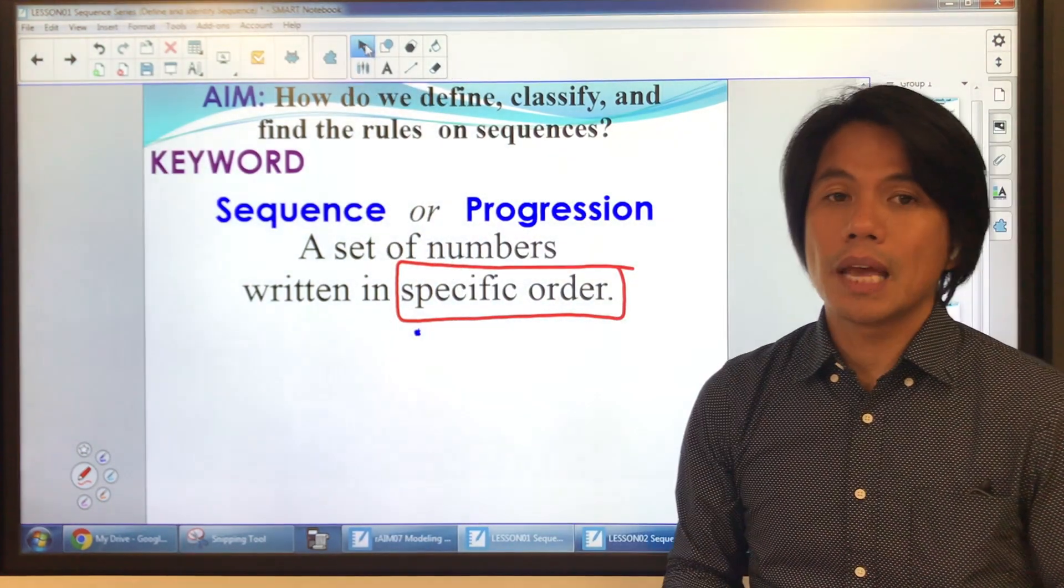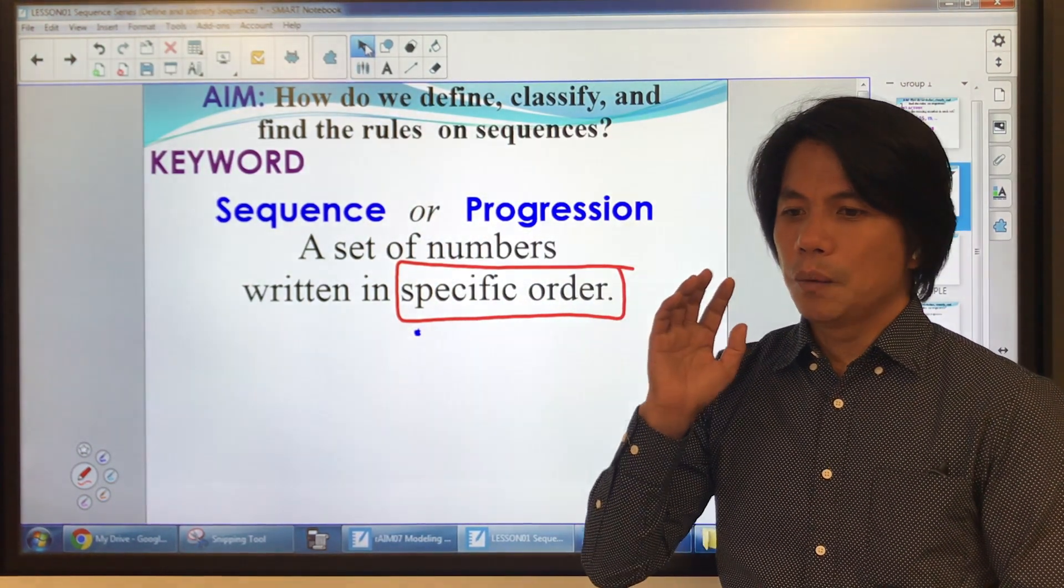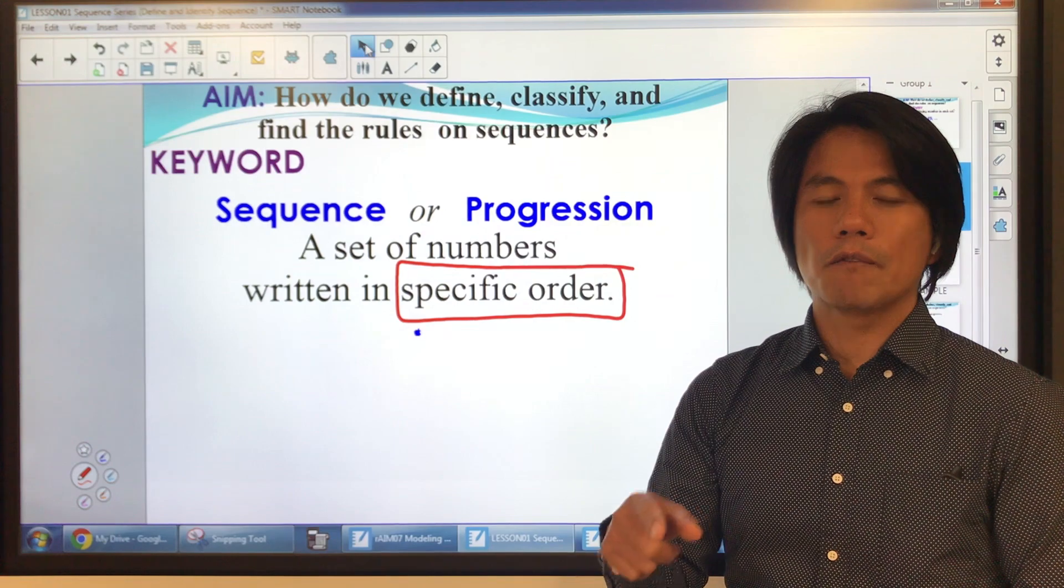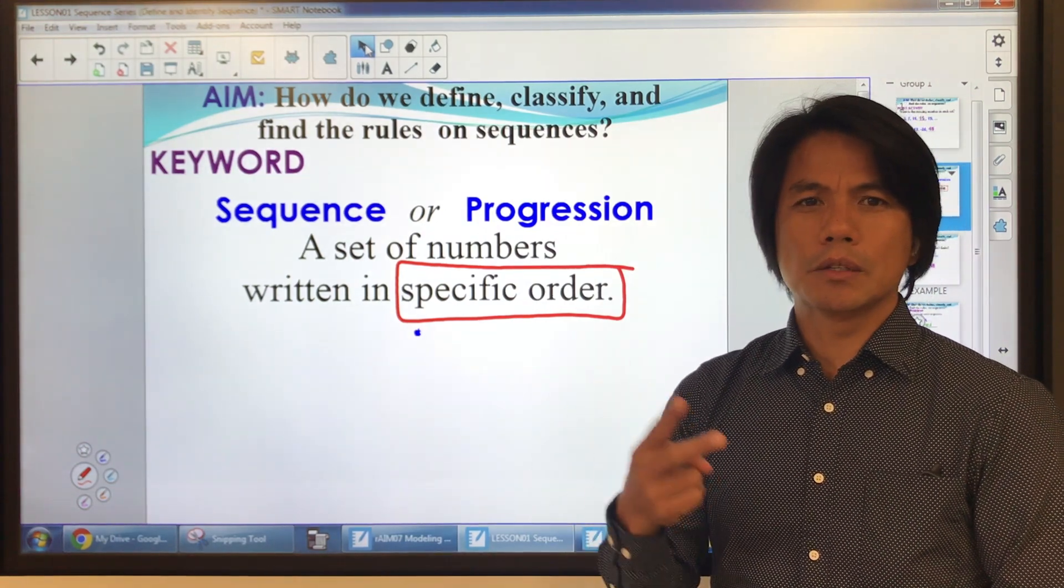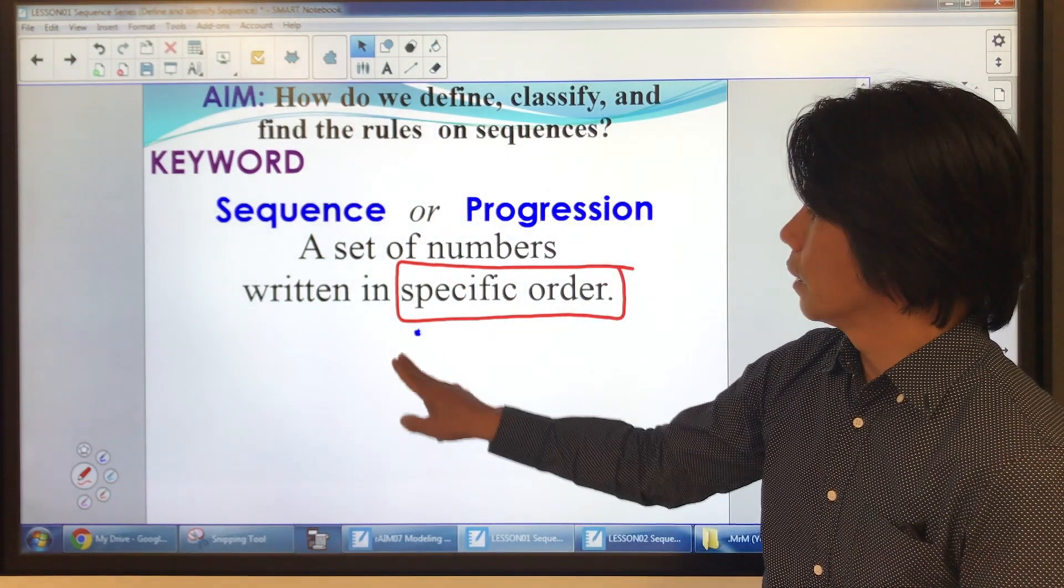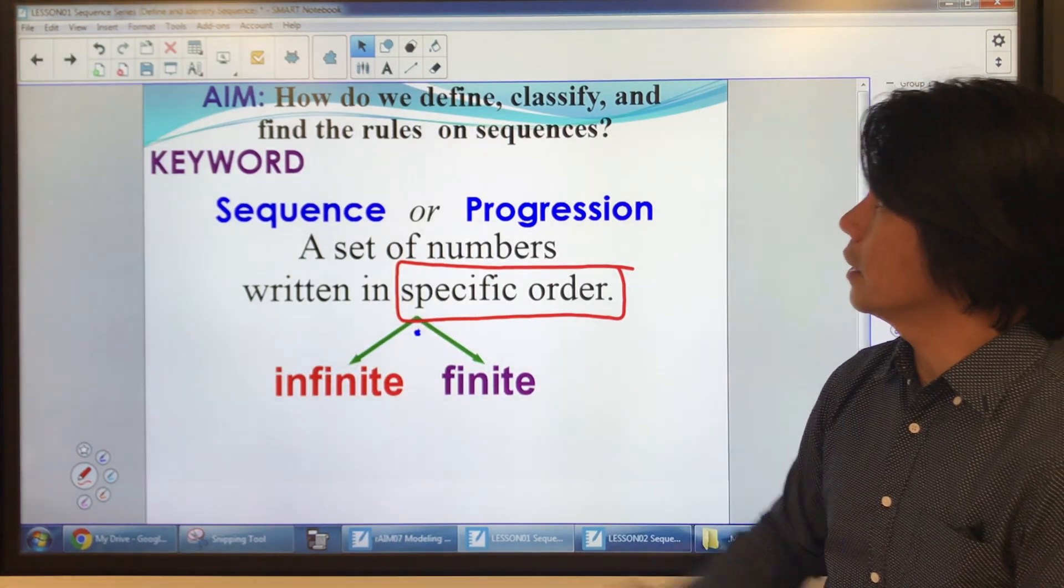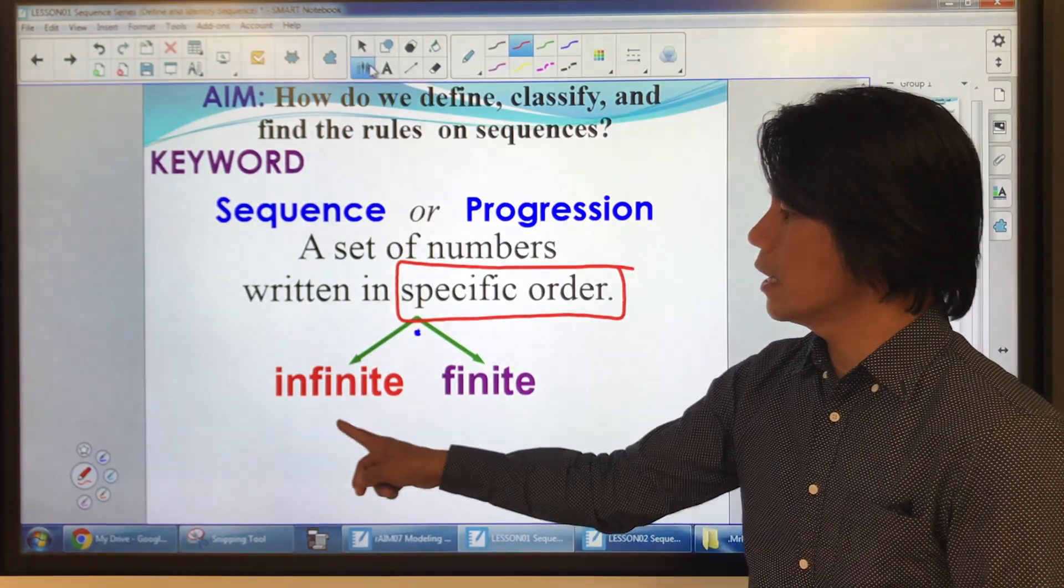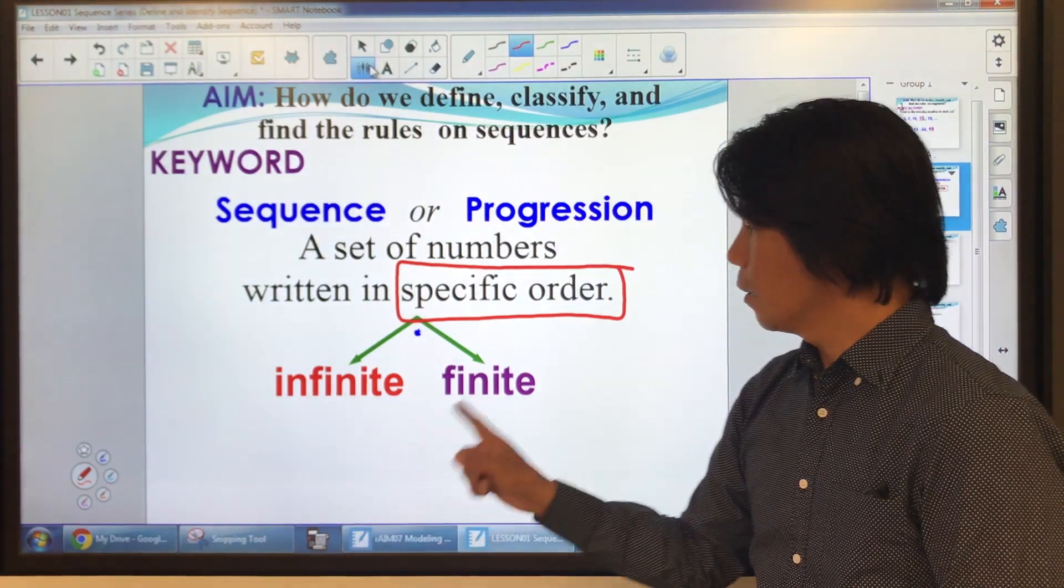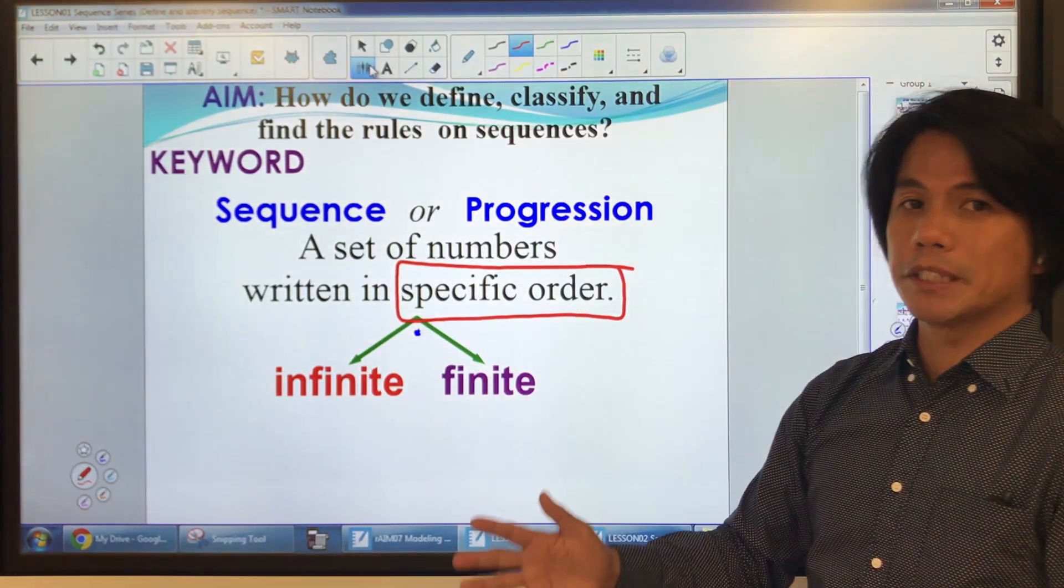Now, for this lesson, we can categorize or classify a sequence into two. They are infinite and finite. When we say infinite, it keeps going. When we say finite, it stops. It's limited.